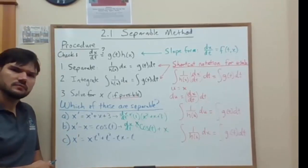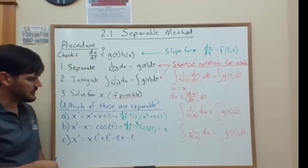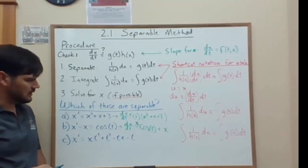Now the last one. We have it in slope form, x prime equals this sum of terms. I'm going to look on the right hand side. Can we separate that? Well, there's lots of terms, so let's see.